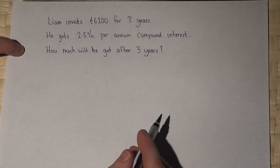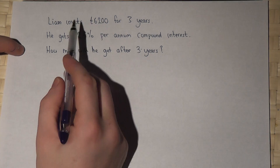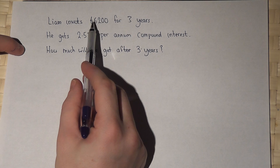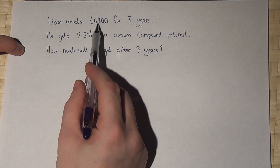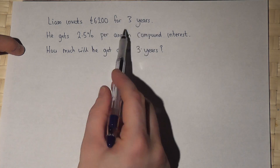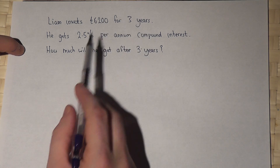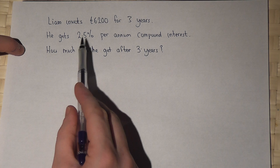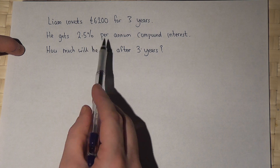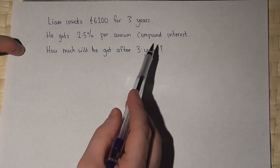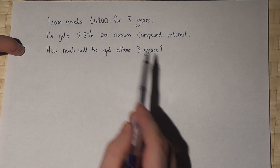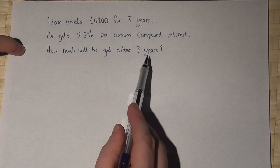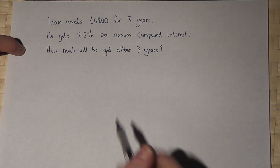In this question, we're told that Liam is investing some money — £6,200 for three years — and he gets 2.5% compound interest per year. So how much will Liam get after three years?